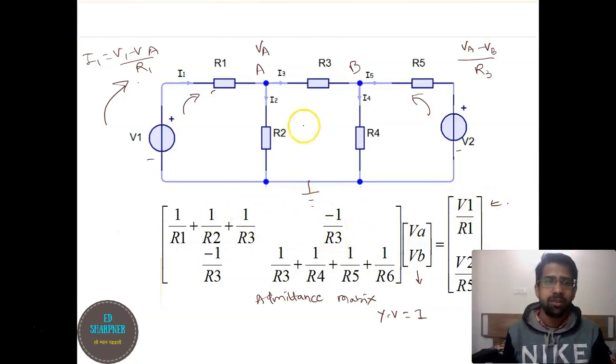So how to put this value? For node A, which is node 1, we will assume all the admittances connected to node 1 and the summation of it. So the admittances connected to node 1 are 1 upon R1, 1 upon R3, and 1 upon R2. So we are adding all these admittances.